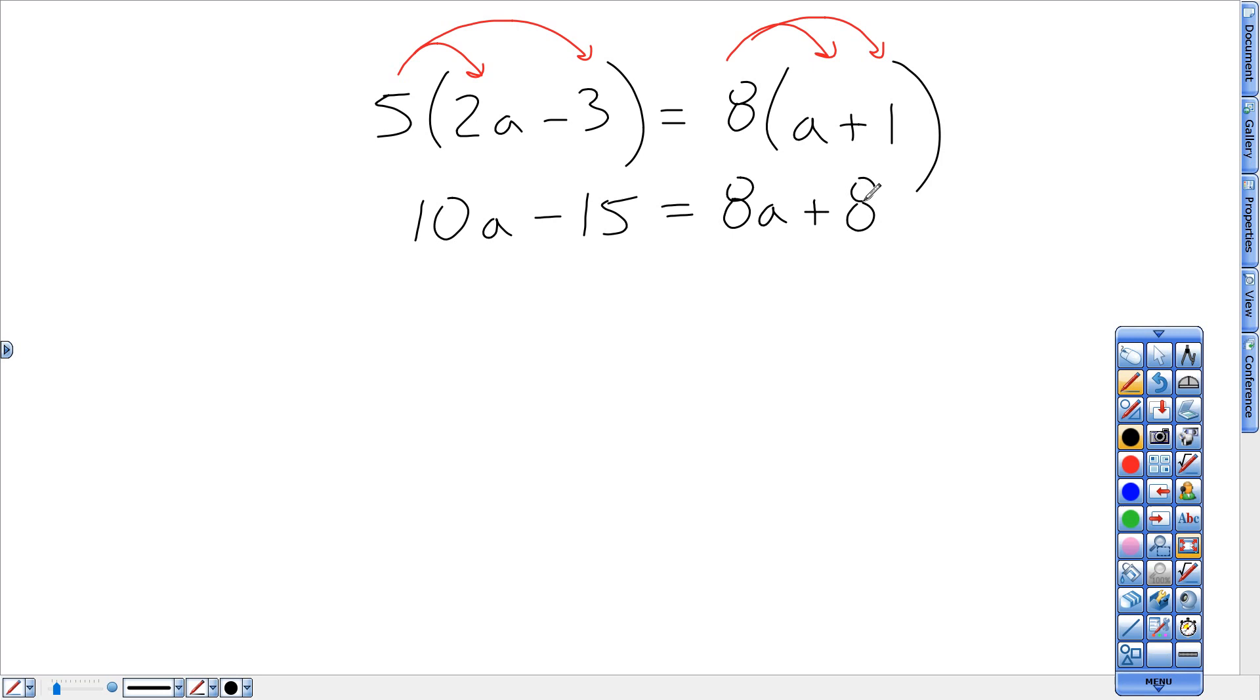Now it becomes a variables on both sides where I start on the left. First step, get rid of the number on the left. Second step, get rid of the variable on the right. Third step, back to the left, divide. So the first two steps involve adding and subtracting. Start by getting rid of the plain number on the left by doing the opposite.